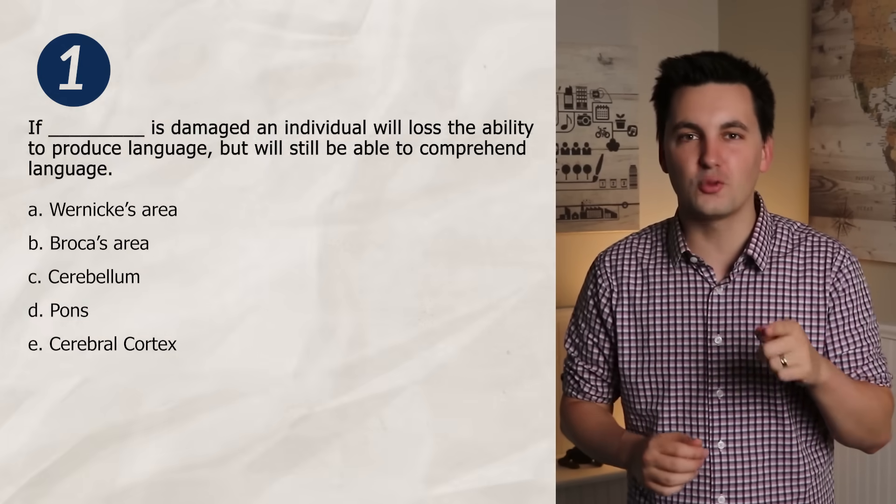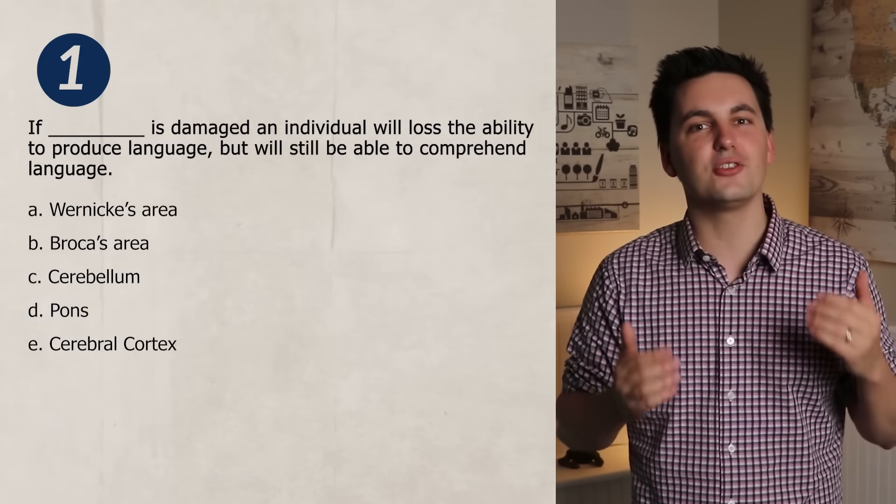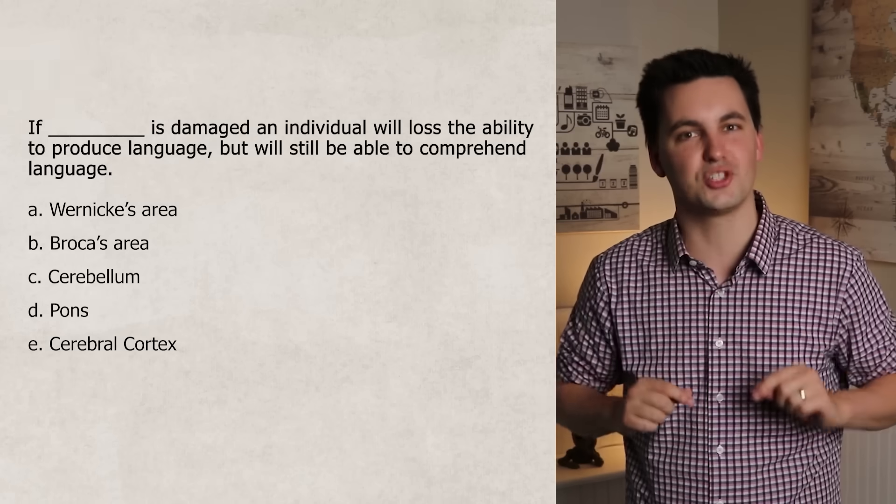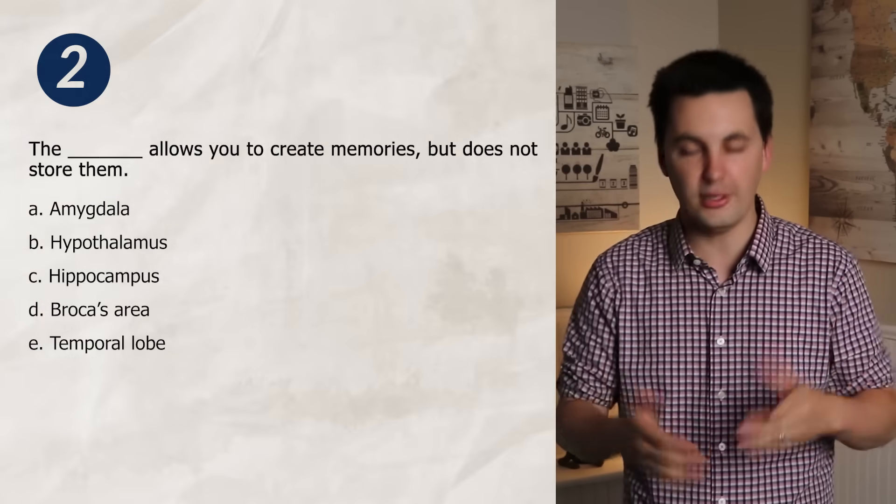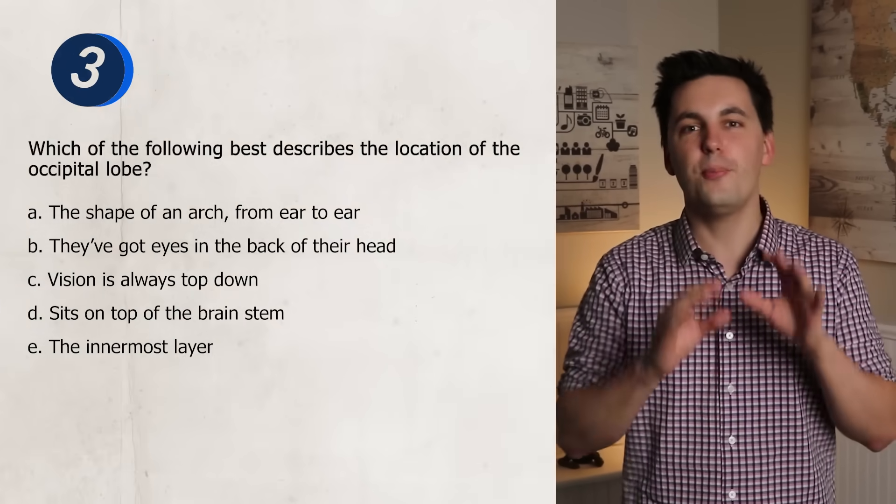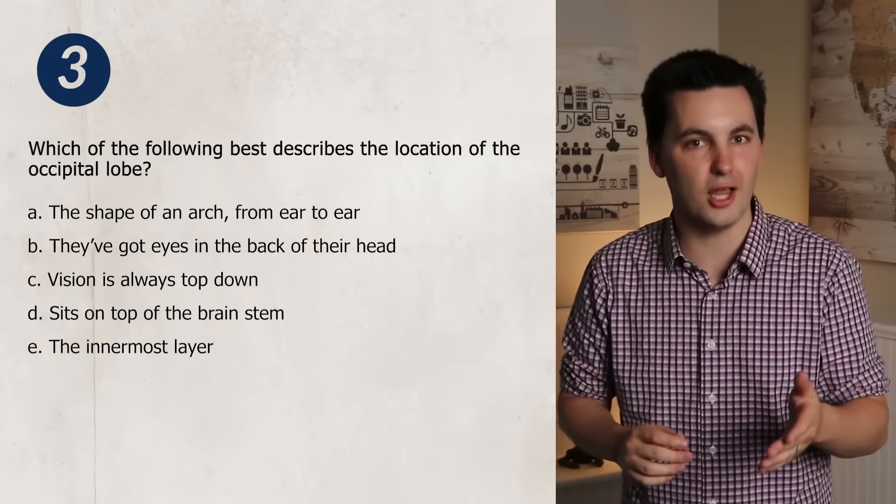Now, believe it or not, this was actually just a quick overview of the brain. There's a lot more complexities to the brain and more structures that we could get into. But for now, we need to practice what we just learned. Answer the questions on the screen and check your answers in the comment section below. And when you're down there checking your answers, don't forget to go to the description of this video and check out my ultimate review packet. The packet has information on every single unit of AP Psychology.